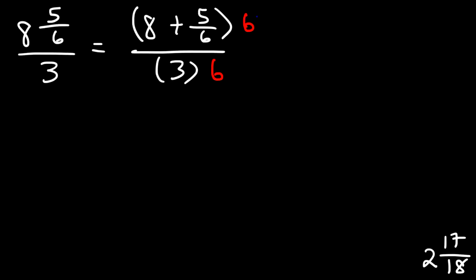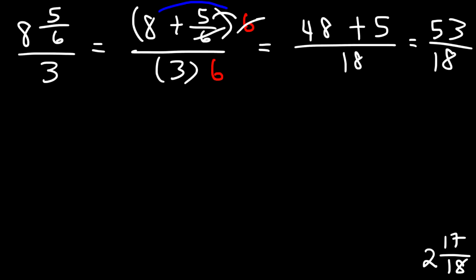So I need to distribute this 6. So 8 times 6 is going to be 48. And then 5 over 6 times 6, the 6 will cancel, giving me 5. And so I have 48 plus 5 on the bottom, 3 times 6 is 18. And 48 plus 5 is 53. So notice I got the same improper fraction.